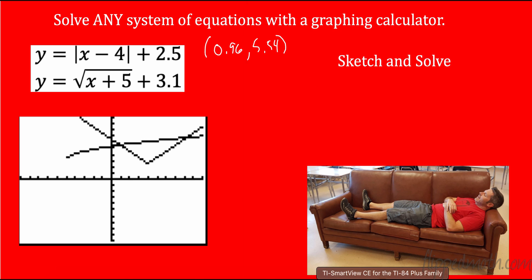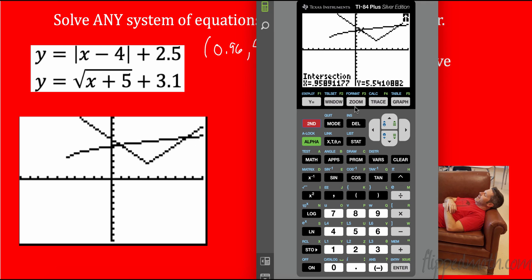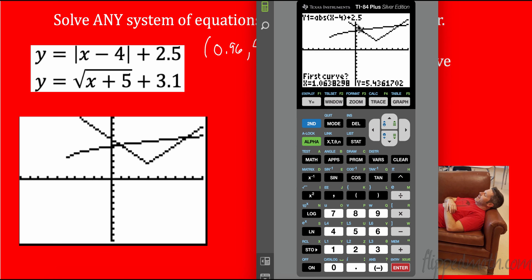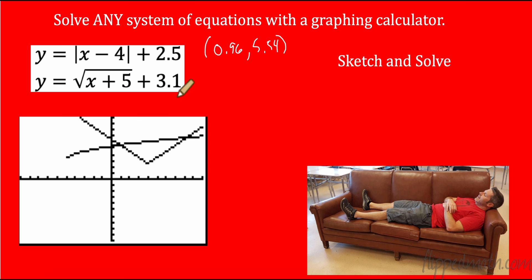All right. Now we need to find the second one. So it's the same process. I go to Second, Calc. I have to do the intersection, so I go down to 5 again. Now I need to move it to the other side here, where the other intersection point is. Just need to get as close as I think it can get. First curve, yes. Second curve, yes. And here we have our intersection. It looks to be 8.24 and 6.74. So let's write that down. We have 8.24 and 6.74. Now in this equation, it only intersected twice, so that's fine. We're done. We found them both.